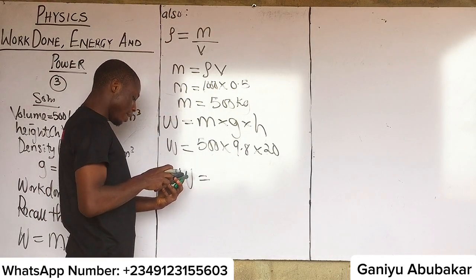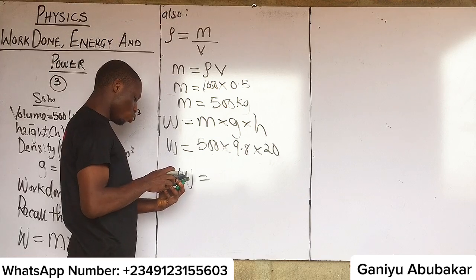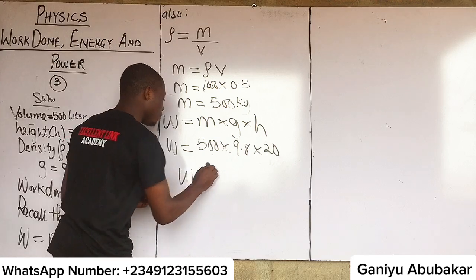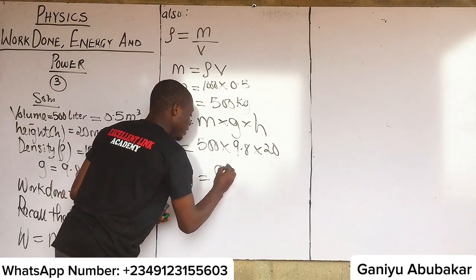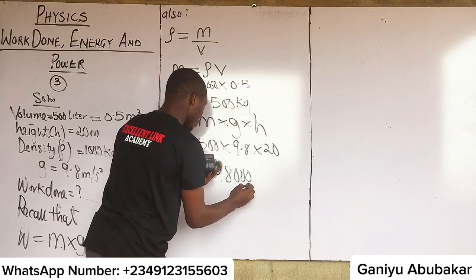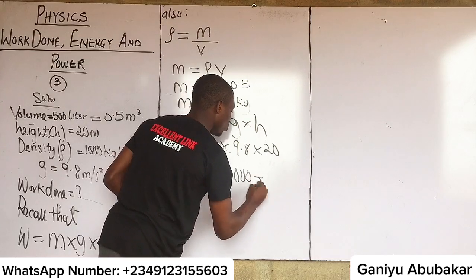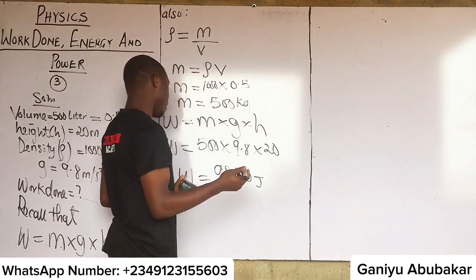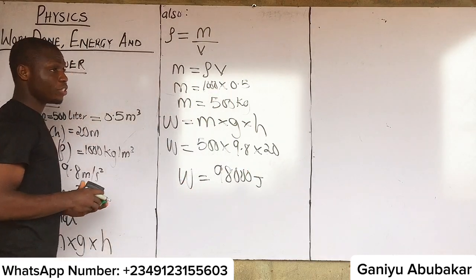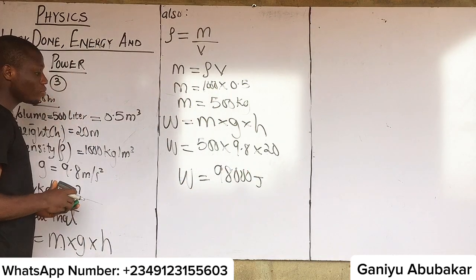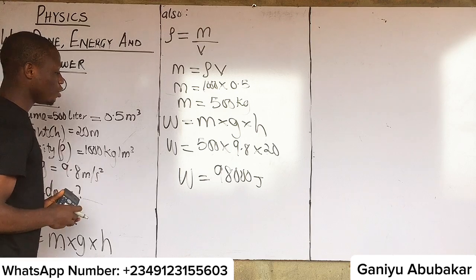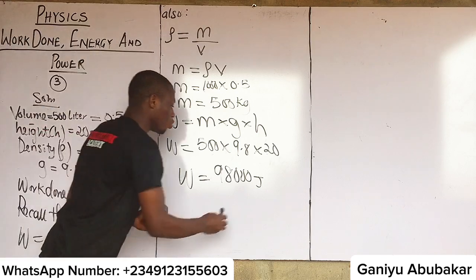Multiplying 500 by 9.8 by 20, the work done equals 98,000 joules.